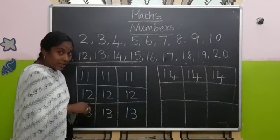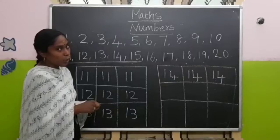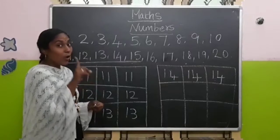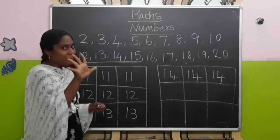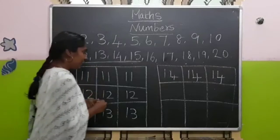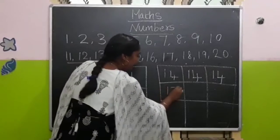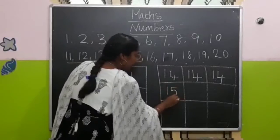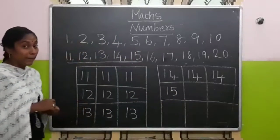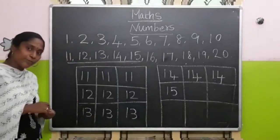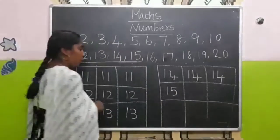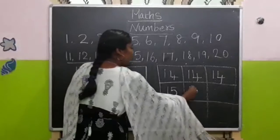To write number 15, you have to put 1 and 5. 1 and 5 makes number 15.